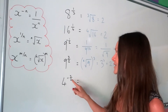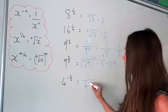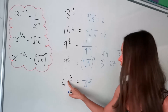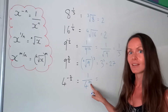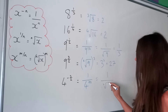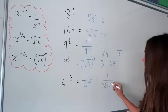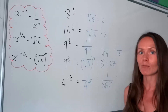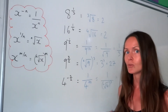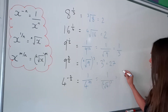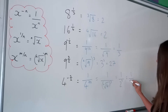For the last one, it's a negative power, so write the number as a fraction: 1 over 4 with the power now positive 3 over 2. The denominator of the power tells us to square root 4. Then outside the brackets we put the power of 3, meaning we cube that answer. The square root of 4 is 2 (taking the positive value), and 2 cubed is 2 times 2 times 2, which is 8. So the answer is 1 over 8.